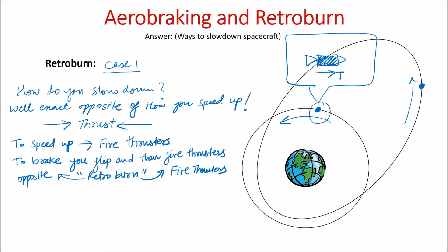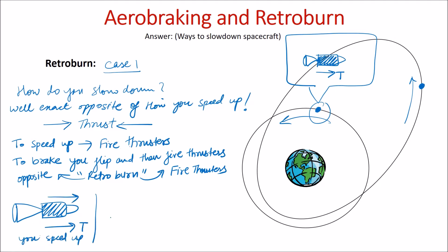Retro burn basically means: "retro" means opposite and "burn" means fire thrusters. For example, if the direction of motion and the direction of thrust are the same, the spacecraft will speed up. But if the direction of motion is towards the right and thrust is towards the left, the spacecraft will slow down.